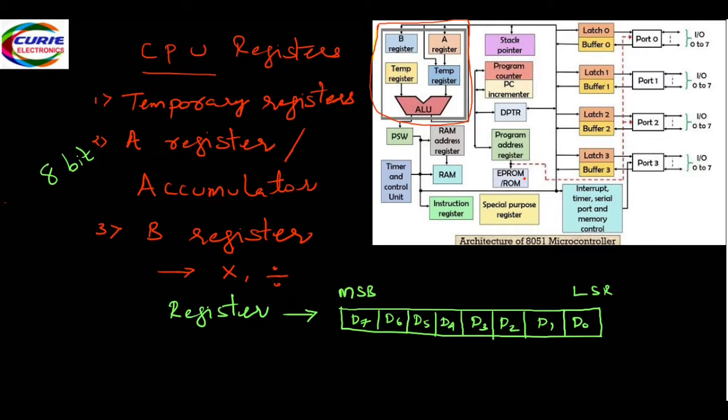We can store any binary values — for example, 1, 0, 1, 0, 1, 1, 1, 0 — anything like that. As per our requirement, we can convert to decimal or hexadecimal, whatever it is. As per the need, we can manipulate this. So basically, registers are used to store data.